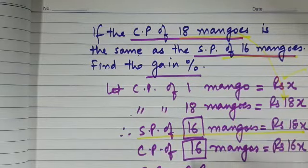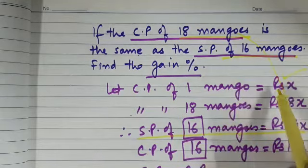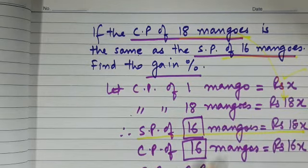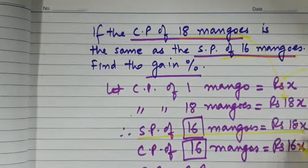What is the SP of 16 mangoes? It is 18x. Can you tell me what is the CP of 16 mangoes? If CP of one mango is Rs. x, so CP of 16 mangoes will be 16x.